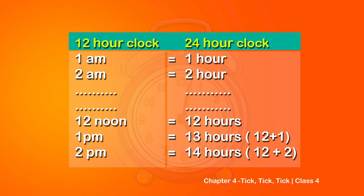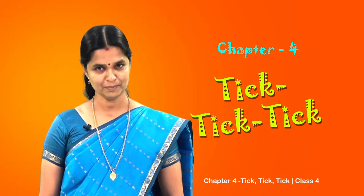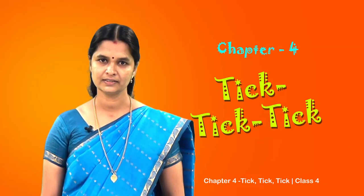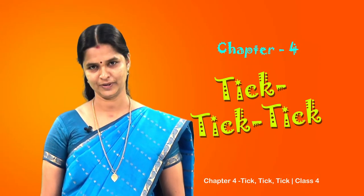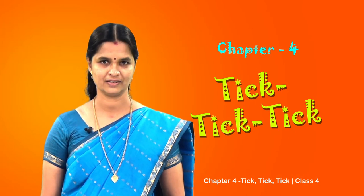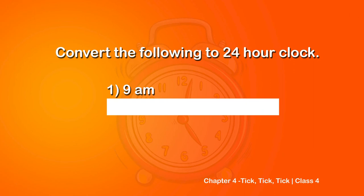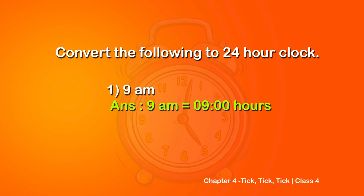Now let me ask you some more questions. Convert the given time from 12-hour clock to 24-hour clock. The first question is 9 AM. Here the time is given in AM, that is morning 9 o'clock. So there is no change in the time in both 12-hour clock and 24-hour clock. We can write that 9 AM is equal to 9 hours.